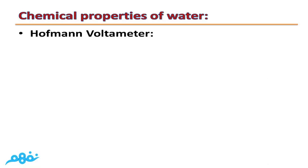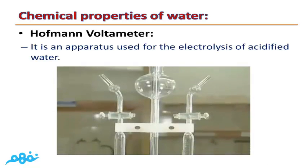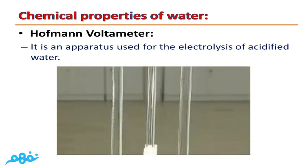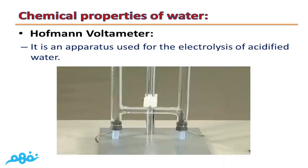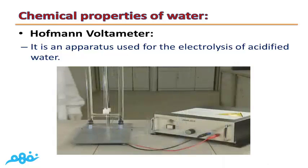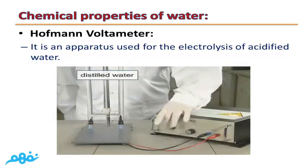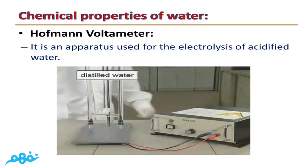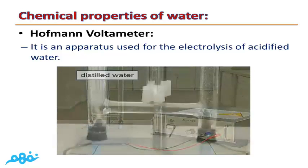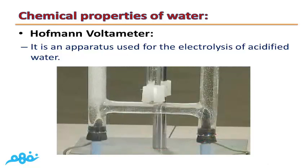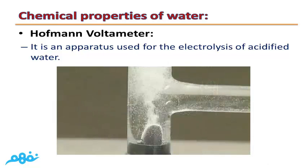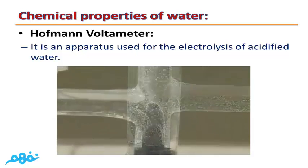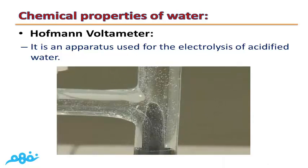The apparatus used to carry out the electrolysis of water is called the Hoffman voltmeter. It is an apparatus used for the electrolysis of acidified water using a battery. In the Hoffman voltmeter, we can carry out the electrolysis of water, and it shows the produced gases of hydrogen and oxygen.